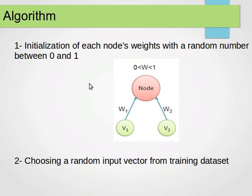The algorithm works as follows. We initialize each node's weights with a random number between zero and one. Remember, each node will have a weight vector. The number of weights there is similar to the number of input variables or features. Then we choose a random input vector or a random point from the training dataset.